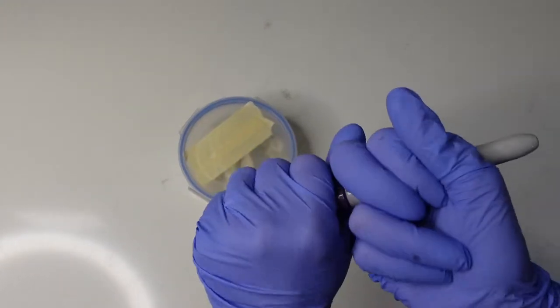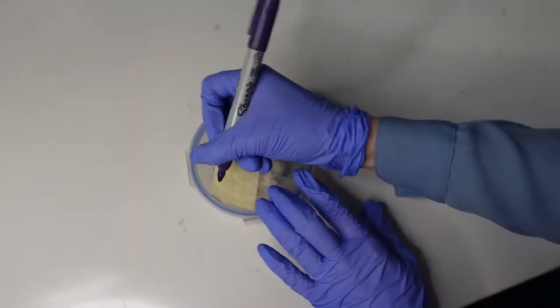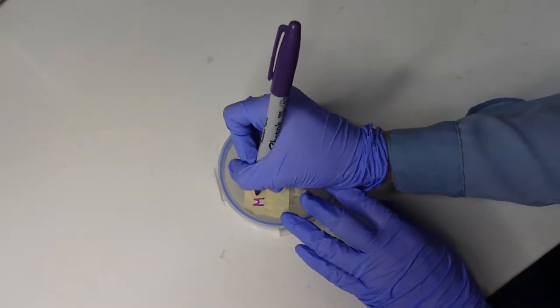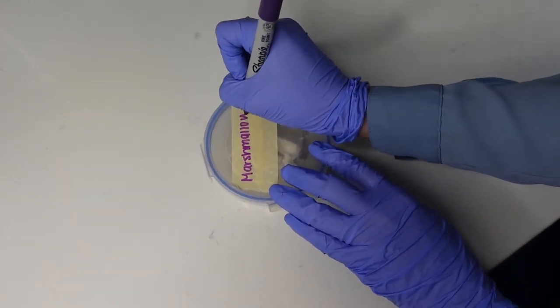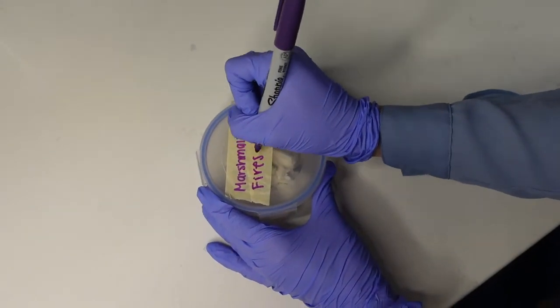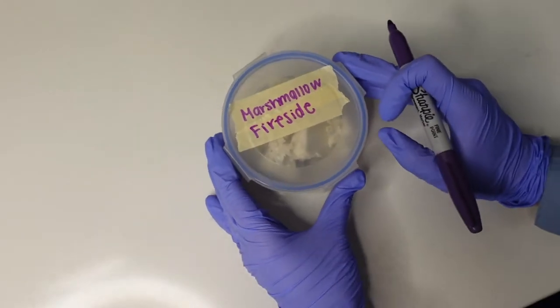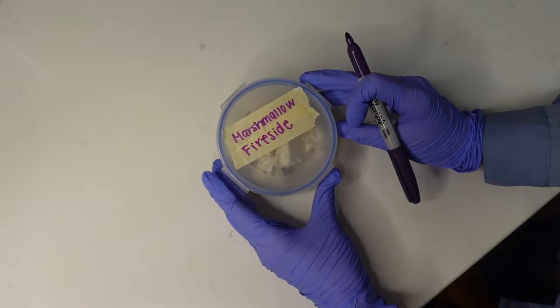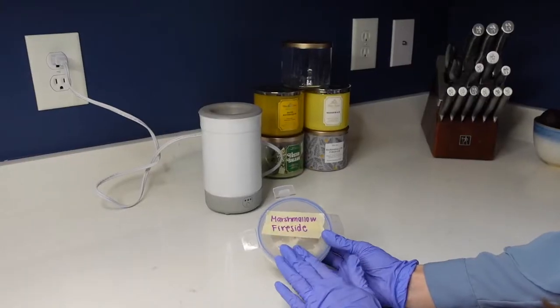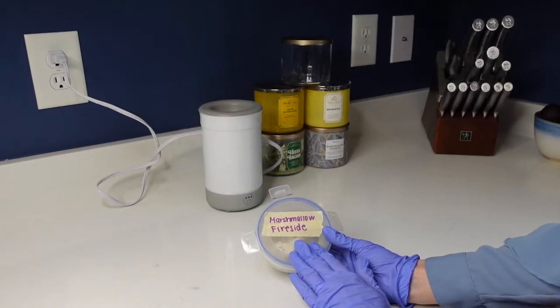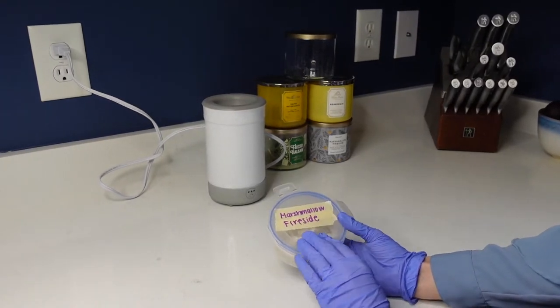If you're just using a sandwich bag you can obviously skip this step. So this one is Marshmallow Fireside, and this makes a big difference when you have multiple of these at once, that way you know what you're burning. You may be wondering what do we do with this wax since we got rid of the wicks.